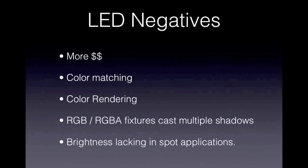That's a problem when you're trying to light costumes, people, or scenic elements where exact color rendering matters. RGB and RGBA fixtures also cast multiple shadows, especially in point-source applications where you're trying to highlight specific figures or actors on stage. That's important because LED already has what some people call a metallic feel due to the way color is rendered — if it's also casting multiple shadows, it's that much more of a separation from the lighting that people have come to expect, especially in stage applications.